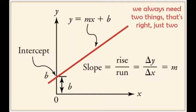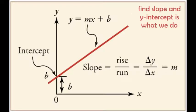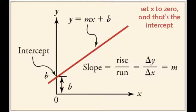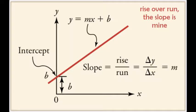We always need two things, that's right just two, find slope and y-intercept is what we do, set x to zero and that's the intercept, rise over run, the slope is mine.